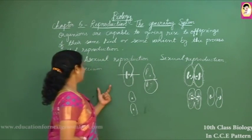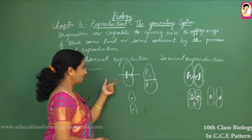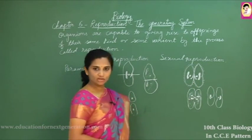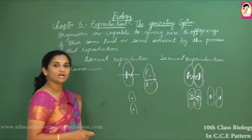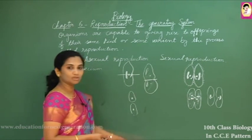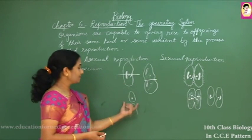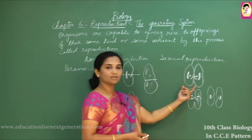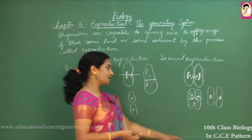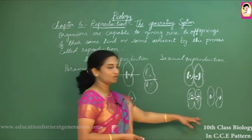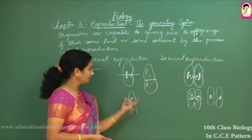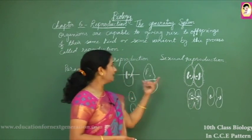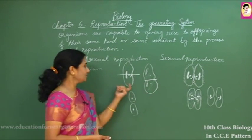Analyzing asexual and sexual modes: in asexual reproduction, only one organism takes part and offspring are identical to the parent — no structural or genetic variation, done by mitotic division. Sexual reproduction involves two organisms, forms gametes that fuse into a zygote, and is considered more beneficial from an evolutionary aspect due to the variation it produces.